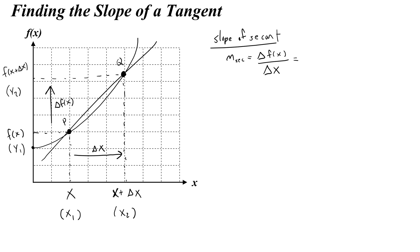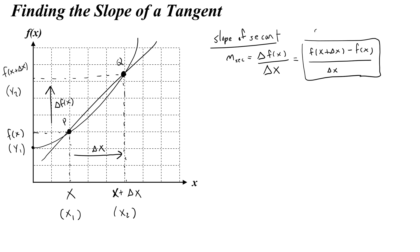If we write the change in f of x over the change in delta x, we get f of x plus delta x minus f of x on top. On the bottom, we have x plus delta x minus x — the x and the negative x cancel, so it's just over delta x. This is called the difference quotient, a special function proposed by Isaac Newton and often called Newton's quotient.